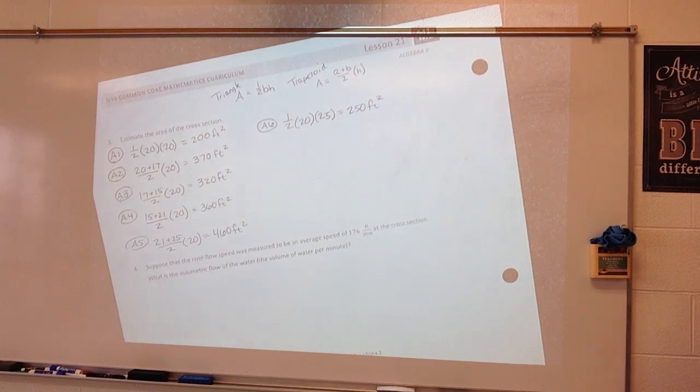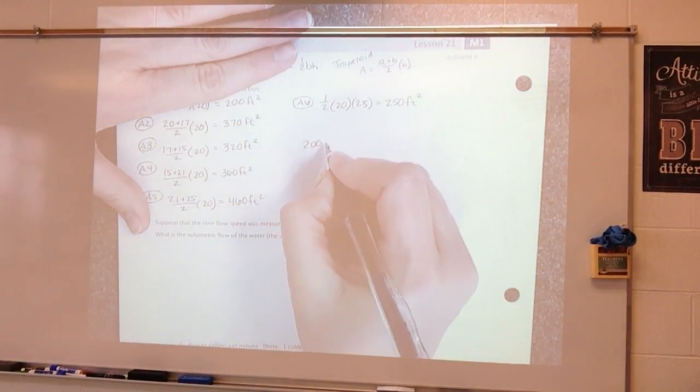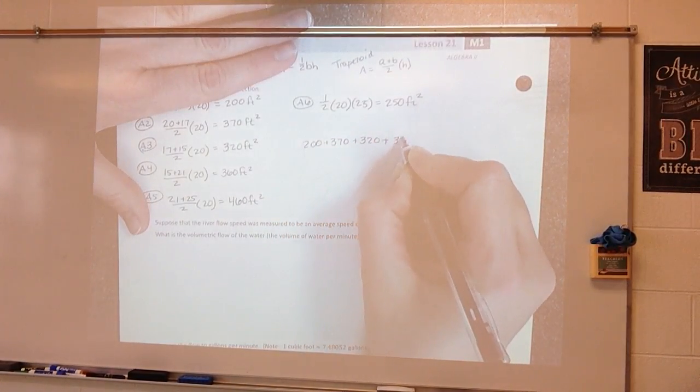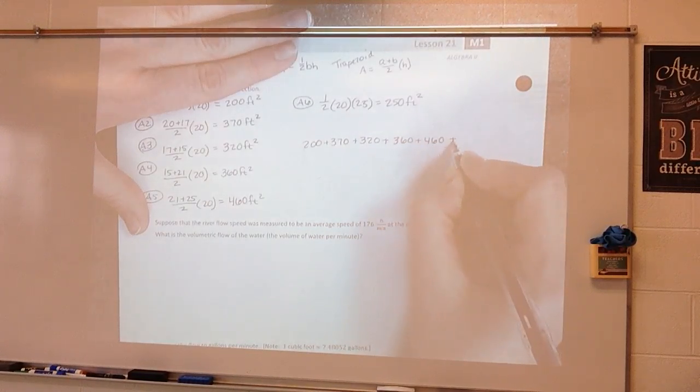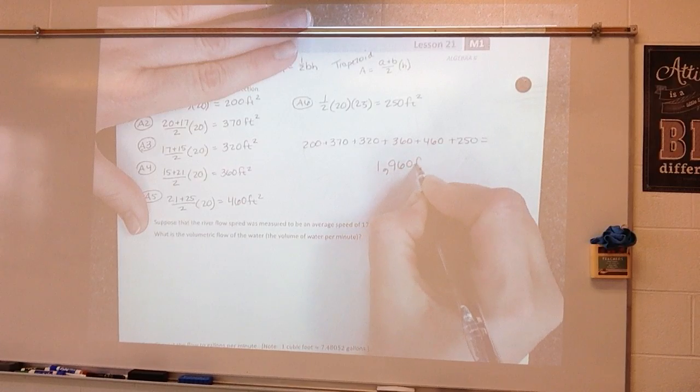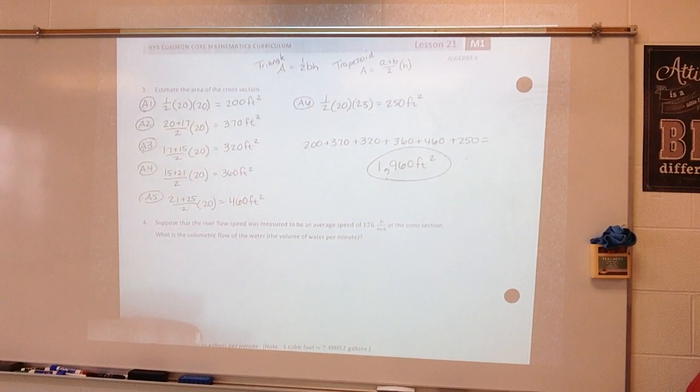Now if we want to figure out what is the estimated area of all of this then what I have to do is 200 plus 370 plus 320 plus 360 plus 460 plus 250 and when I add all of that together it gives me 1960 square feet. So that is the estimated area and it is estimated because we have a little area that we didn't calculate due to the fact of drawing those trapezoids and triangles.